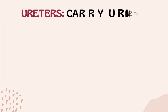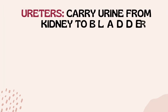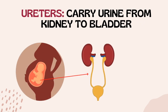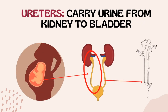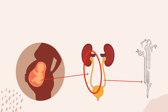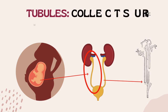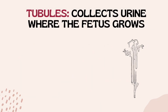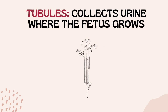During normal development of a fetus, two thin tubes of muscles known as ureters — which are long tubes that carry the urine from the kidney to the bladder — grow into the kidneys and branch out to create a network of tiny tube structures known as tubules. These tubules collect the urine while the fetus grows and are responsible for returning nutrients, fluids, and other substances that have been filtered from the blood back to the blood if the body needs it.